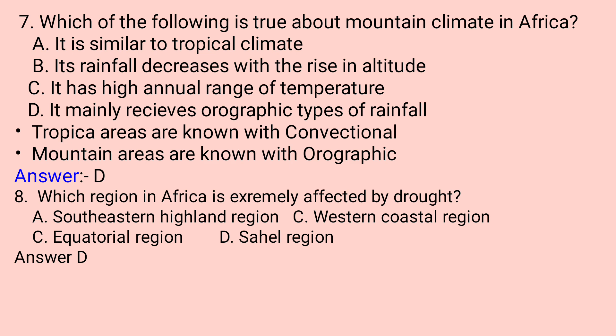Question number seven: Which of the following is true about mountain climate in Africa? A. It is similar to tropical climate. B. Rainfall decreases with rise in altitude. C. It has high annual range of temperature. D. It mainly receives orographic types of rainfall. Tropical areas receive convectional rainfall, whereas mountain areas receive orographic rainfall. As altitude increases, rainfall increases. So the correct answer is D.